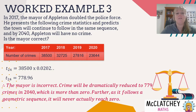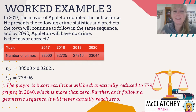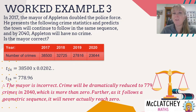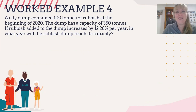The mayor is incorrect. Crime has been drastically reduced to 779 crimes in 2040, but it will never reach zero. Because this is a geometric sequence, each year crime reduces by 15% of the remaining amount. Eventually we'll have less than one crime, but technically it will never actually reach zero — that's a key property of geometric sequences with a ratio between 0 and 1.